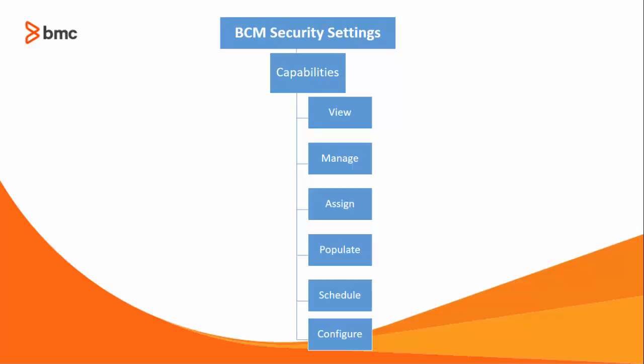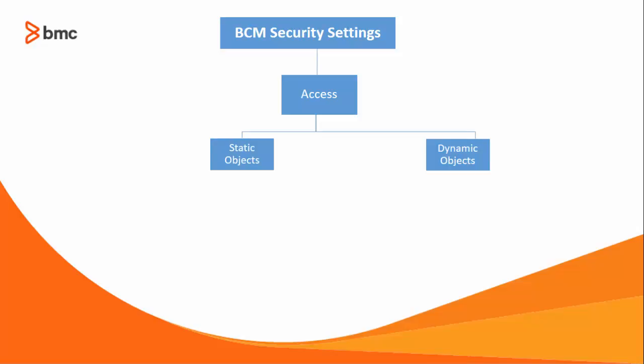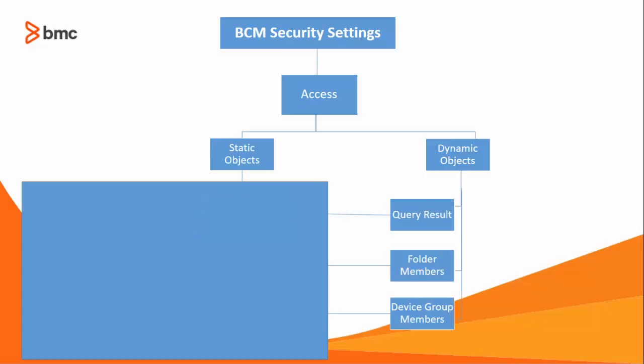The other component to define a security profile is access rights. The access rights allows or denies administrators access to different objects and controls the ability of the administrator to perform operations on those objects. When you assign objects whose members are dynamically populated — for example, member devices of a device group — these objects are called dynamic objects. There are three ways to dynamically assign objects: through a query result, folder members, or device group members. When you assign specific objects to administrators — for example, specific devices — these objects are known as static objects.